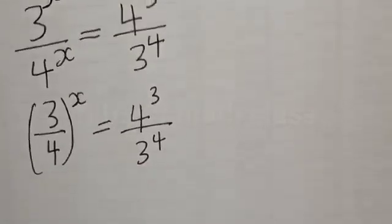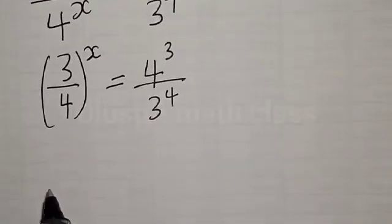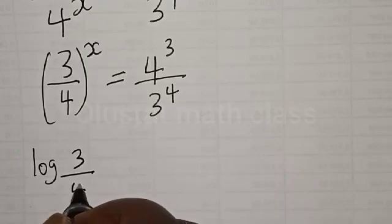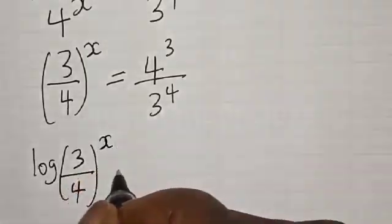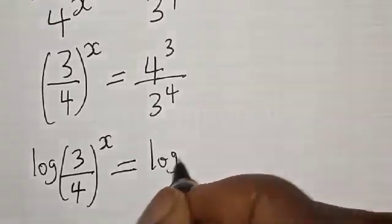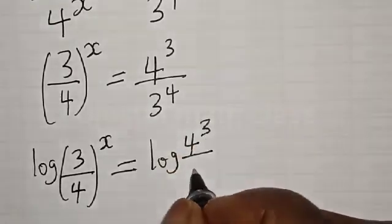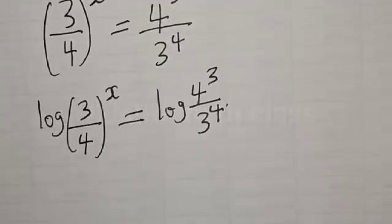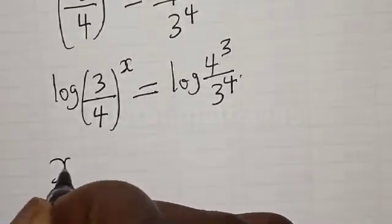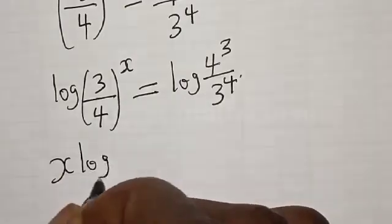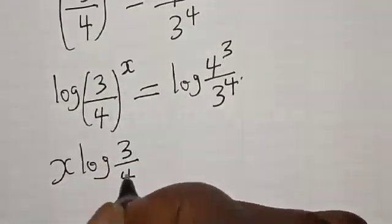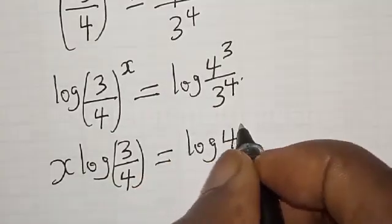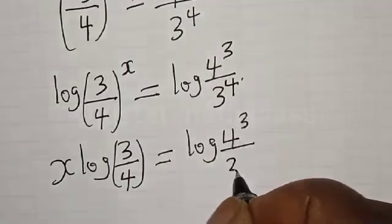Now let's take the log of both sides. We have log of (3 divided by 4) raised to power x is equal to log of (4 raised to power 3 divided by 3 raised to power 4). Applying the power rule of logarithms, we get x times log(3/4) equals log(4 raised to power 3 divided by 3 raised to power 4).